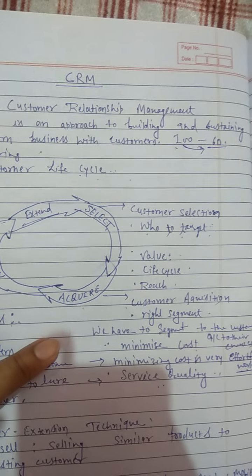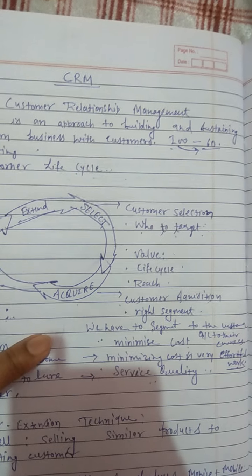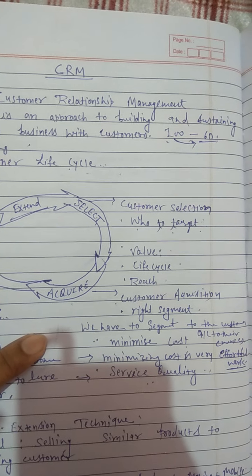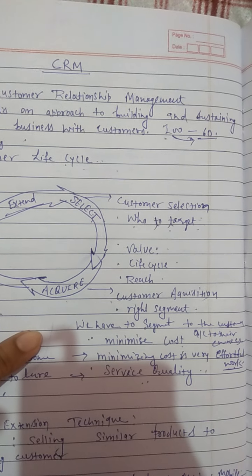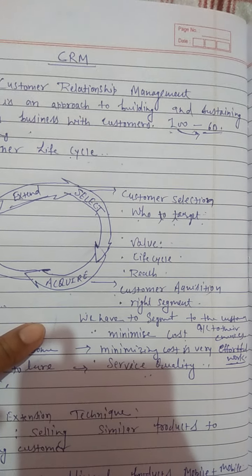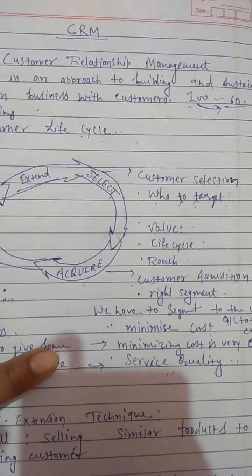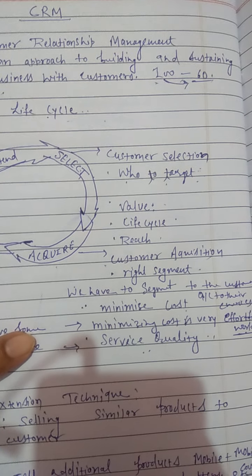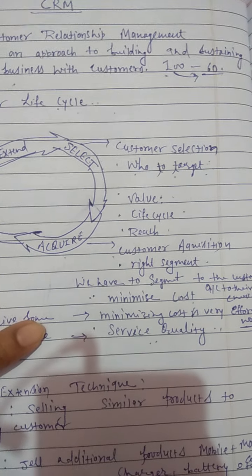The reach step means you have to fulfill their requirements. The second step is Acquire — customer acquisition means segmenting the customer according to their choices, acquiring the customer, and minimizing the cost. But you also have to take care of your profit and the customer's needs. Service quality is very important — you have to take care of what type of quality customers want.